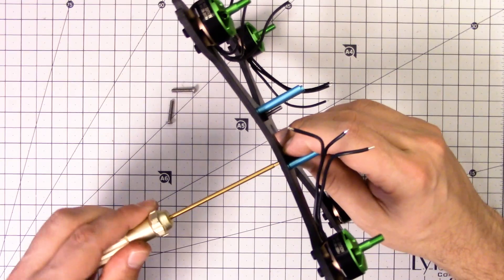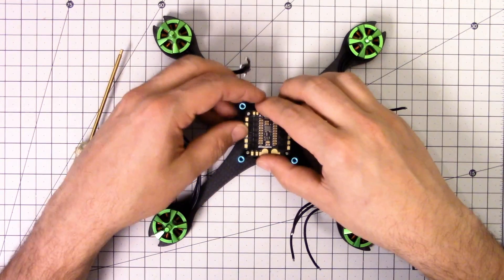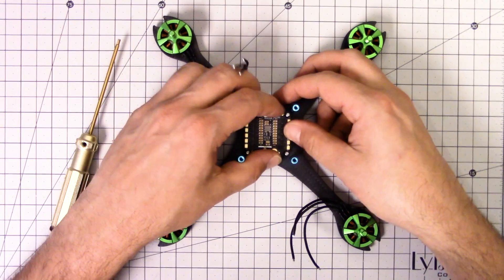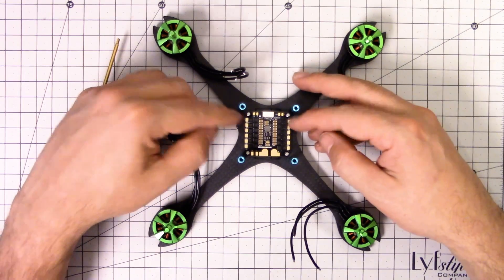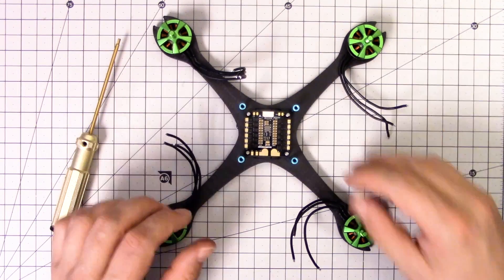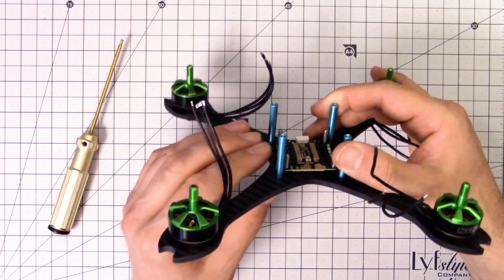Fortunately the spacing of the ESC holes is drilled correctly. You'll see some of these boards come from the factory instead of 30.5 millimeter spacing on the holes they'll have 30 millimeter spacing and they'll go on really tight. If you're not using nylon standoffs or something that has a little bit of flex it will not work.